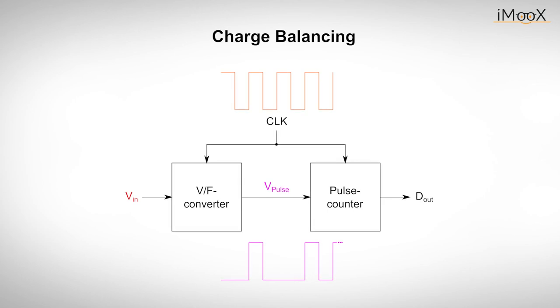A charge balance ADC is basically a voltage to frequency converter. The input voltage is converted into a pulse sequence, whose frequency is measured by a counter and converted into an output code proportional to the analog input signal. The main advantage of these converters is the possibility to transmit frequency signals even in a noisy environment.